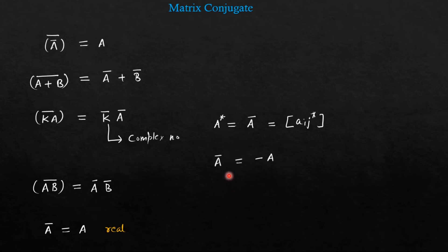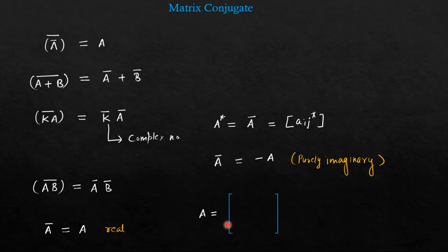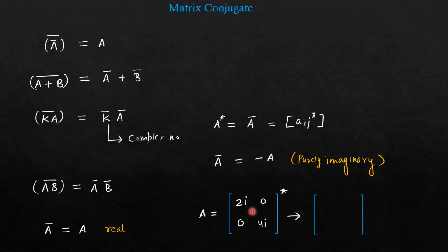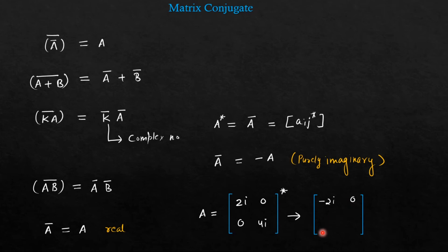But A conjugate will be minus A if the matrix is purely imaginary. For example, suppose we have a matrix A whose elements are 2 iota, 0, 0, and 4 iota. This matrix is purely imaginary — there is no real part. You can write 0 as 0 iota, so you can treat 0 as an imaginary number as well. So after conjugate, the sign will change: it will become minus 2 iota, 0, 0, minus 4 iota — which equals minus A.